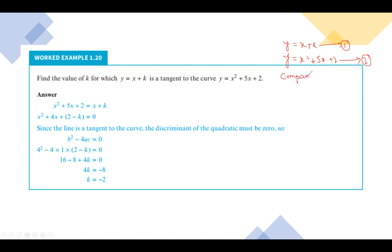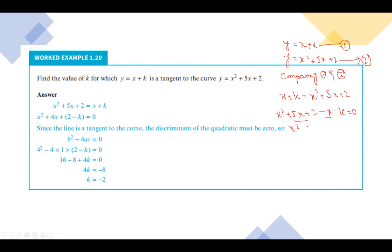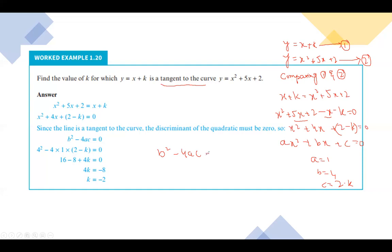Comparing equation one and equation two, by equating: x plus k must equal x squared plus 5x plus 2. Rearranging: x squared plus 5x plus 2 minus x minus k equals zero, which gives x squared plus 4x plus (2 minus k) equals zero. This is in standard form ax squared plus bx plus c equals zero, where a equals 1, b equals 4, and c equals 2 minus k. The discriminant is b squared minus 4ac.